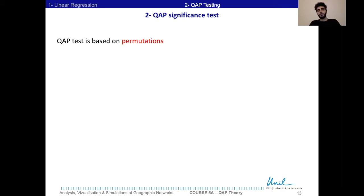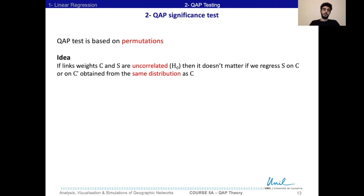The QAP test is based on permutations. The idea here is that if the link weights C and S are uncorrelated, then it doesn't matter if we regress S on C or on C' which would be obtained from the same distribution as C, since in any way they are uncorrelated. How do we obtain this C' since we don't have the distribution of C? Then actually we take C as a sample of the original distribution of C, and then we take C' by shuffling the entries of C, since C represents a sample of the original distribution.